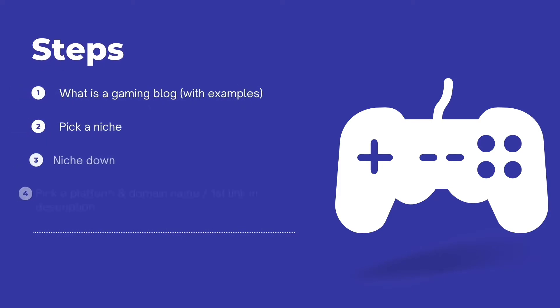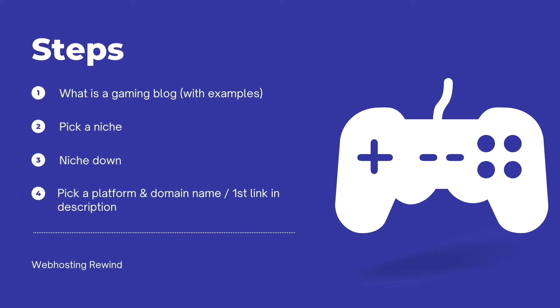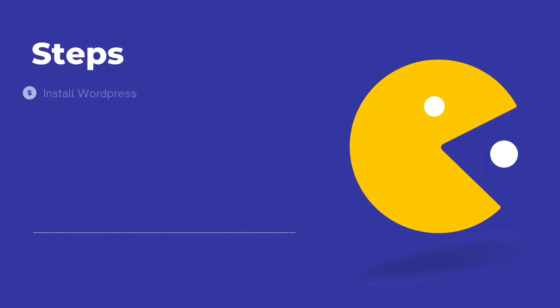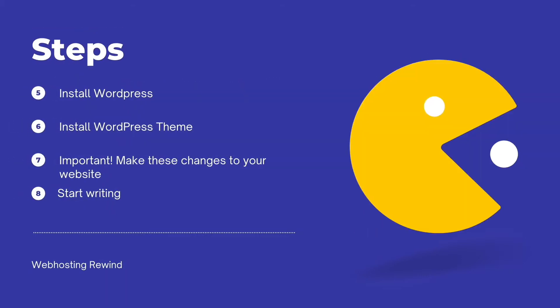What we're going to do today is basically define what a gaming blog is, show you a few examples, show you how to pick a niche and why picking a niche is so important, talk about niching down and why that is even more important, show you how to pick a platform and get a domain name for free — you can click that first link in the description. After that, we're going to talk about installing WordPress, installing a WordPress theme, and important changes you absolutely have to make in order to start getting traffic to your website.